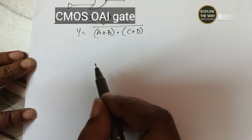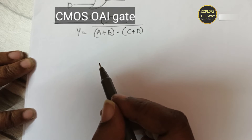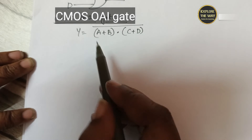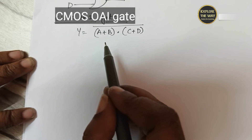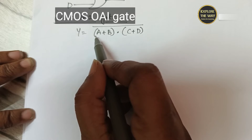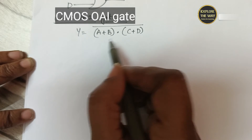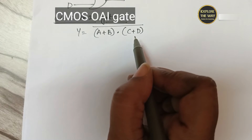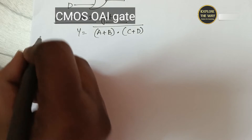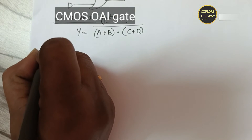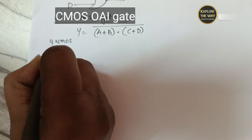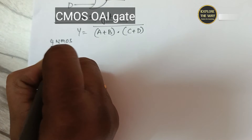The nature of CMOS logic is to produce complementary output. Here the logic function is already in complementary form, so it requires 4 NMOS transistors and 4 PMOS transistors, because the logic function includes 4 variables.